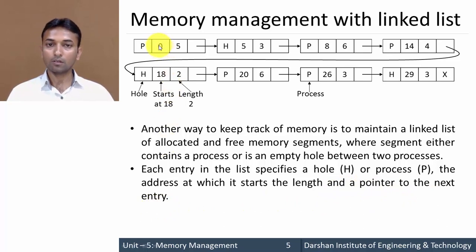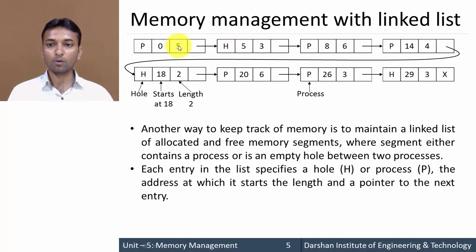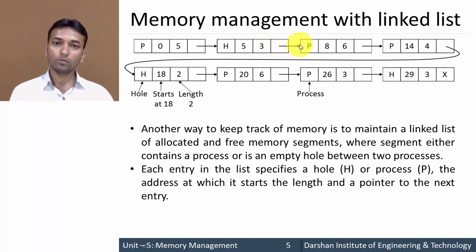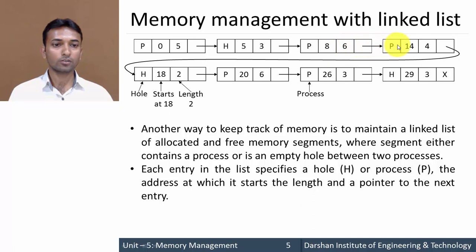The starting address and 5 is the length of that process — how many units are allocated. So for this block: P, starting from address 0, with 5 units allocated, then pointer to next node. The next entry is H (hole) — those units are free — starting address is 5 (since 0 to 4 are allocated), and 3 units are free. Then a process starting from address 8 with 6 units allocated, then another process at address 14 with 4 units allocated, and so on.